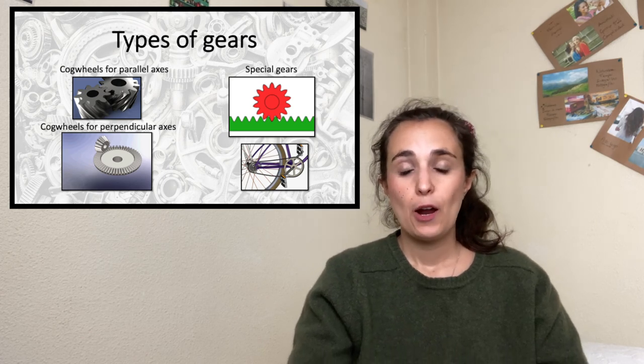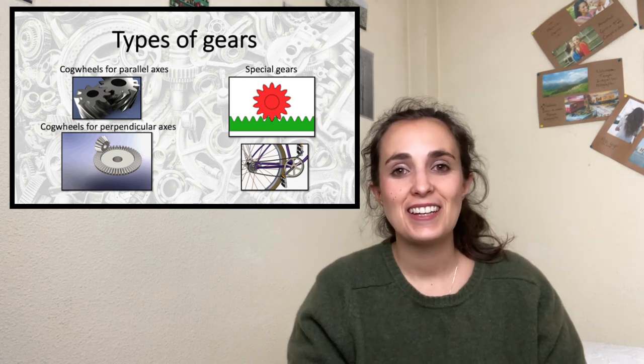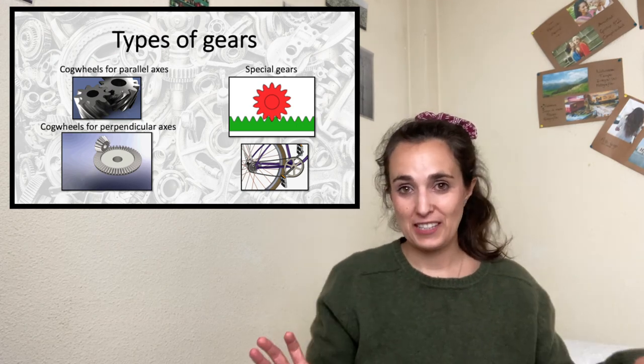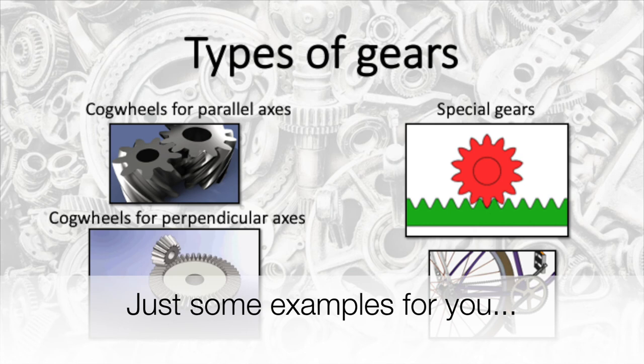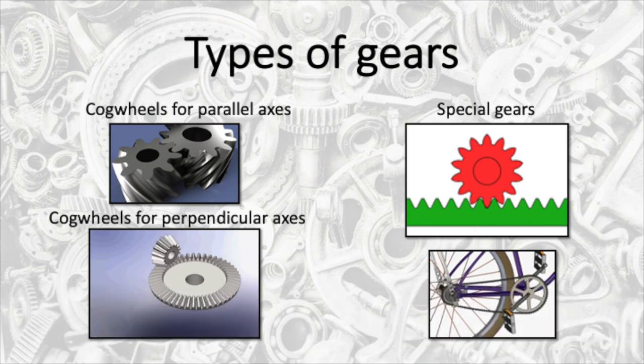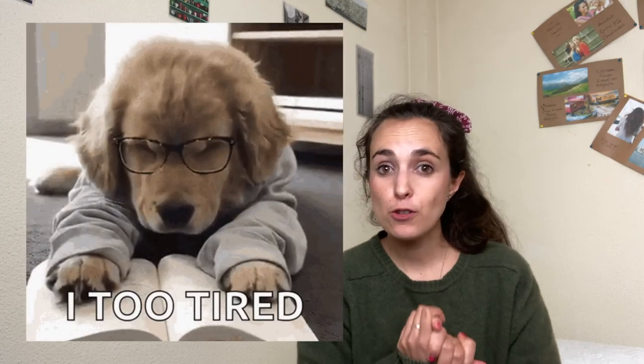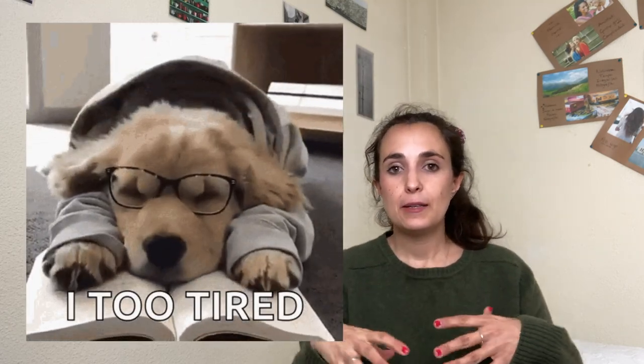Now that we know how to calculate the velocity in a basic gear system, I should tell you that there are more types of gears — but don't worry, we won't learn how to calculate velocity in all of them. And that's it for today! I hope you understand rotary mechanisms and the formulas to calculate velocity. Leave in the comments if you ever learned something about pulleys or gears, and see you soon!